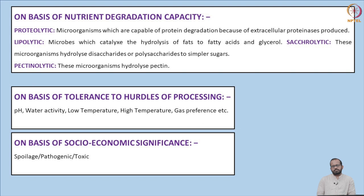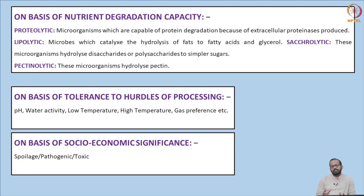Microorganisms can also be classified based on tolerance to different processing hurdles such as pH, water activity, temperature, and gas preferences. On the basis of socioeconomic significance, they can be classified as spoilage, pathogenic, or toxic microorganisms. In canning, target microorganisms are those which can overcome or withstand the current preservation conditions.